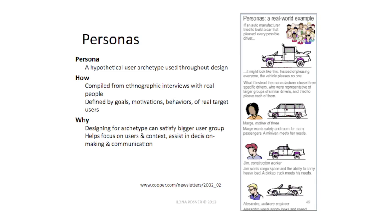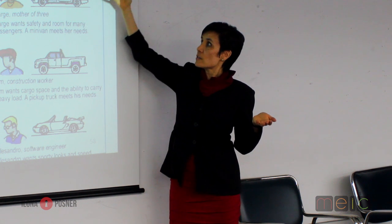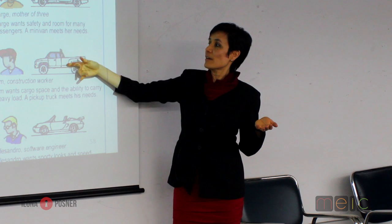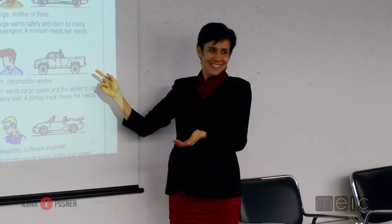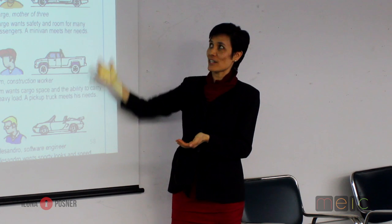If you instead look at Marge the mother of three, Jim the construction worker, and Alessandro the software engineer, you get three different cars. But the car that's good for Marge the mother of three is also good for a little league coach, a scoutmaster, and some construction workers. Construction workers who do small projects as opposed to big projects.